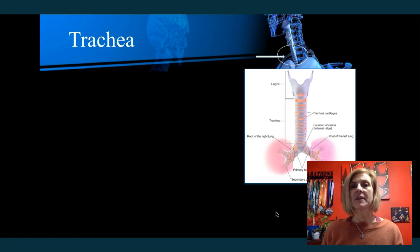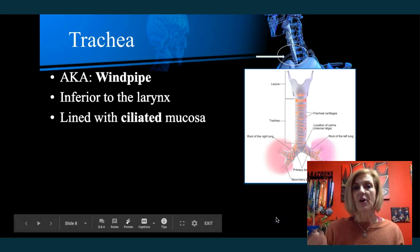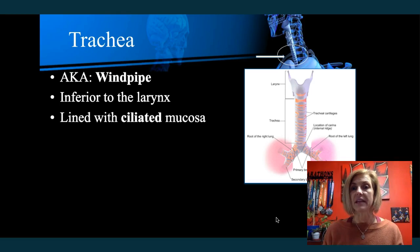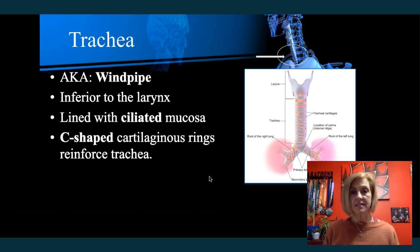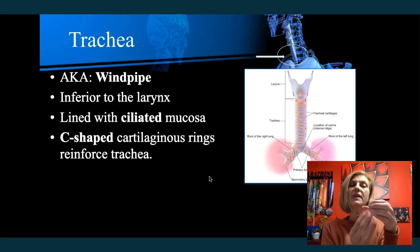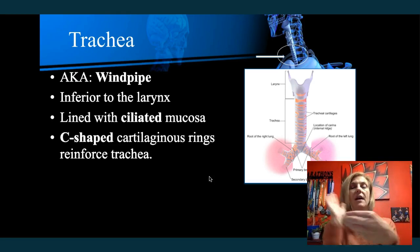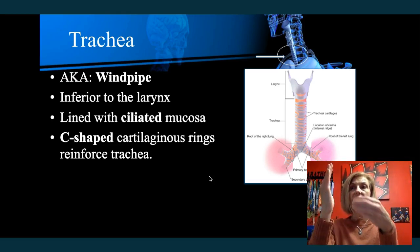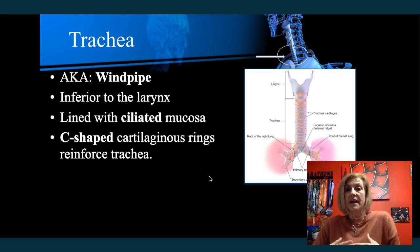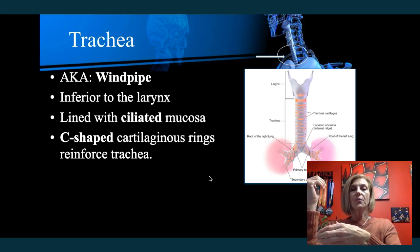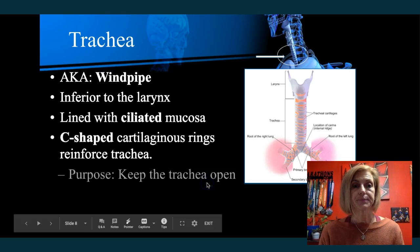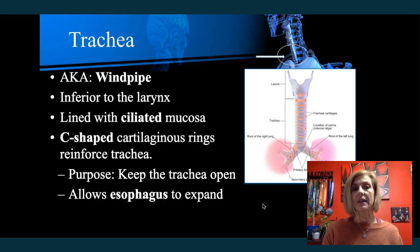Next, we have the trachea, commonly known as the windpipe. It is just below — inferior to — the larynx, and is also lined with ciliated mucosa, so those hair-like cells sweep and the mucosa captures bacteria. The trachea is characterized by C-shaped cartilage rings reinforcing it. The cartilage rings are only on the front side — they don't go all the way around — because behind the trachea is your esophagus. When a food bolus comes through, the esophagus needs to expand forward into that tracheal space. So the C-cartilage helps keep the trachea open while also allowing the esophagus to expand.